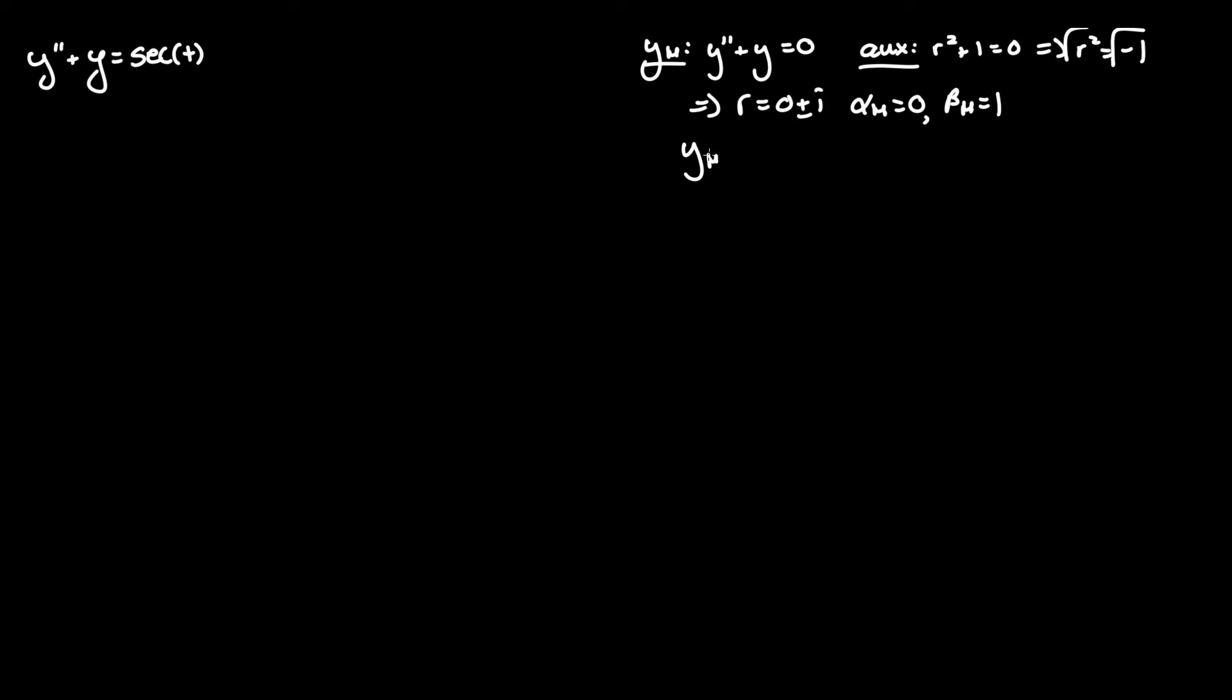This means that for our homogeneous equation, which is equal to e to the alpha t times c1 cosine of beta t plus c2 sine of beta t, that turns into yh equals e to the zero t, which is just one, so just c1 cosine of t plus c2 sine of t.